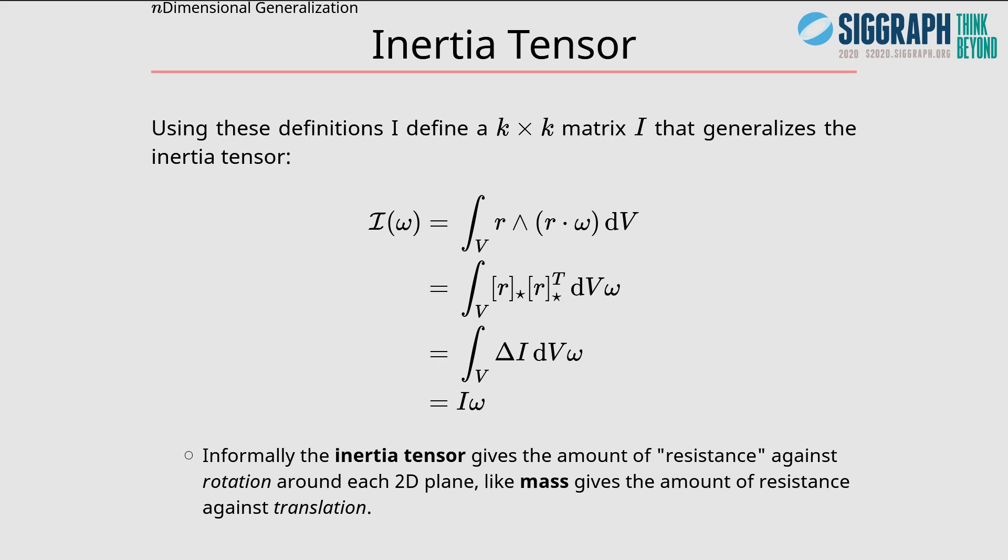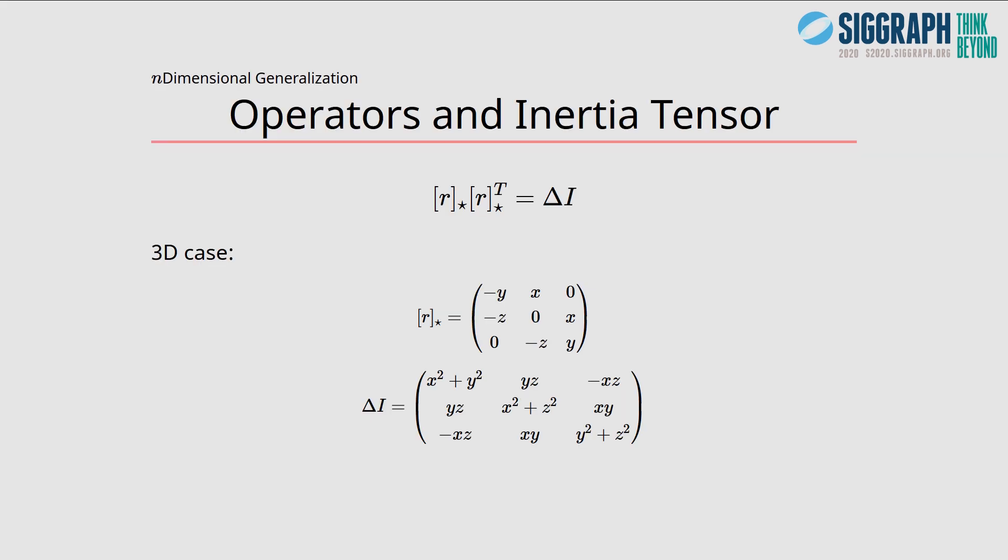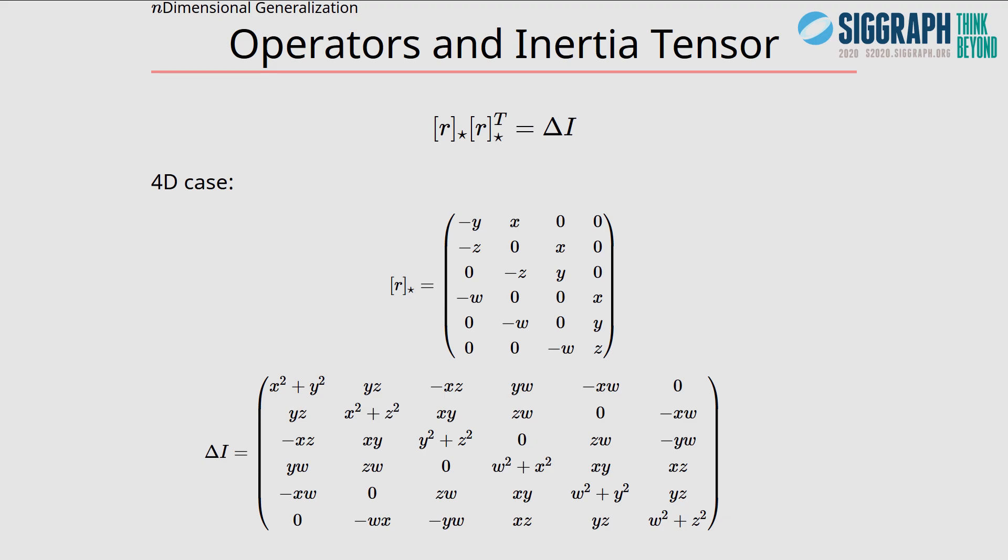Using these definitions we can turn the previous equation into a matrix multiplication, giving us a form for the inertia tensor that works in any number of dimensions. Informally the inertia tensor gives the amount of resistance against rotation around each 2D plane, like mass gives resistance against translation. In 2D r star is a 2 by 1 matrix and the inertia tensor is just 1 by 1, which makes sense since there is only one 2D plane in 2D. In 3D they are both 3 by 3 matrices and we get the same form. In 4D r star is 6 by 4 and the inertia tensor is 6 by 6, which we would expect since it's a mapping from bivectors to bivectors, and in 4D bivectors are 6 dimensional.